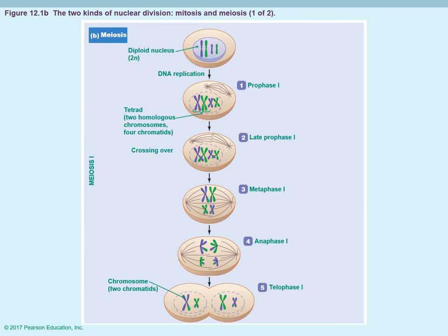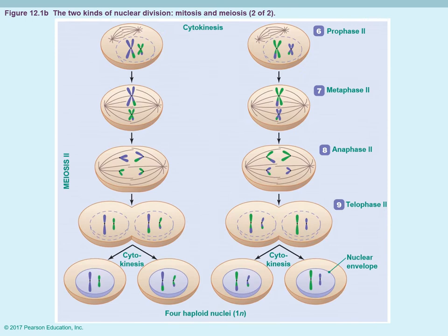In metaphase I, the chromosome pairs — what we call the tetrad — line up right along the middle of the cell. In anaphase I they are pulled apart. In telophase I, the nuclear membrane forms around the chromosomes, and cytokinesis occurs, forming two new daughter cells. You're only halfway through at that point.